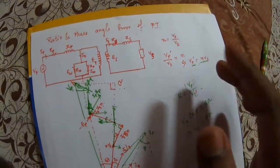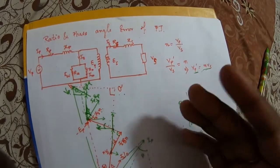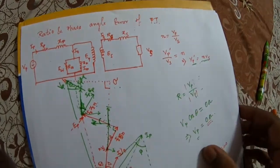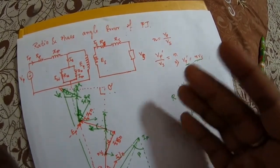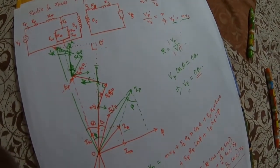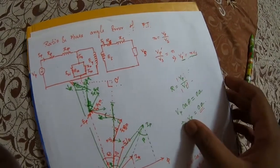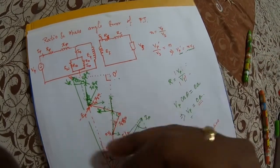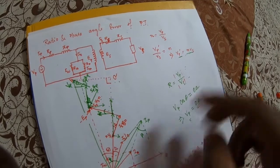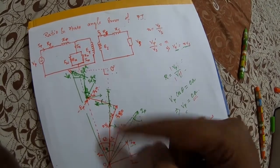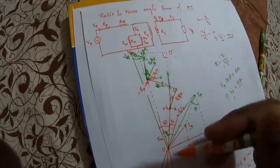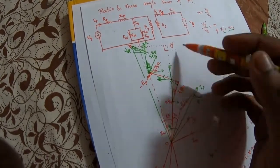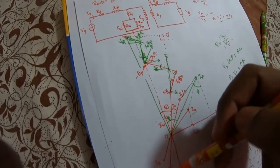In this second part we are going to discuss how to find out the phase angle error of a PT. In the previous lecture I discussed the ratio error of a PT and how it is calculated. The phase angle error of a PT will also be calculated using the phasor diagram — the same diagram. The phase angle error is the angle between Vp and the reverse of nVs.